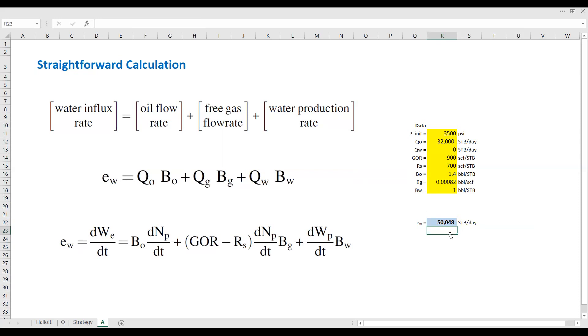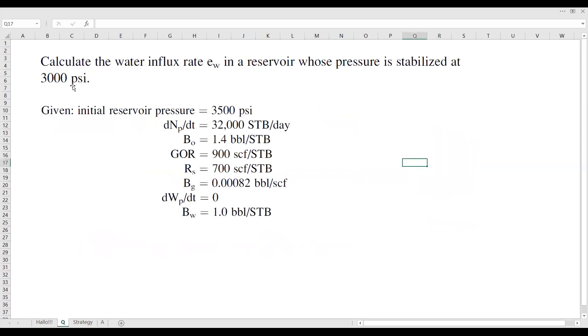All right, so we have 50,000 stock tank barrel per day, which is the water influx rate. All right, so this is the solution for the case we are given to calculate the water influx rate in a reservoir whose pressure is stabilized at 3,000 psi.